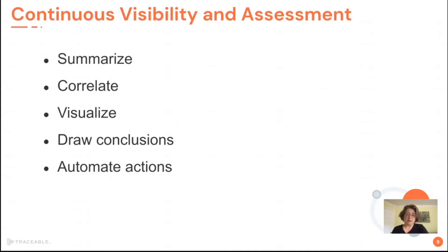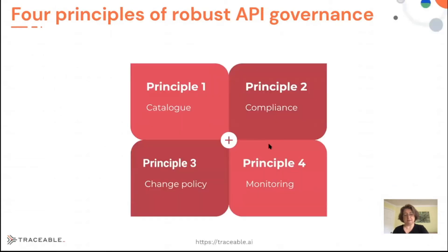The way to answer most of these questions is with continuous visibility, assessment, and remediation. To put it succinctly: summarize, correlate, visualize, draw conclusions, and automate actions based on those conclusions. That's all great in theory, but where do we get started? You get started with four simple principles: first, catalog what you have; then establish what compliance regulations are relevant to your industry and applications; establish a change policy; and then monitor that whatever changes APIs experience still comply with that change policy.